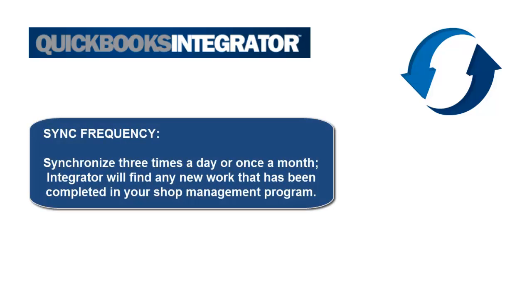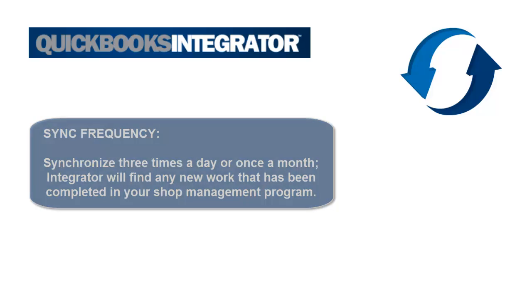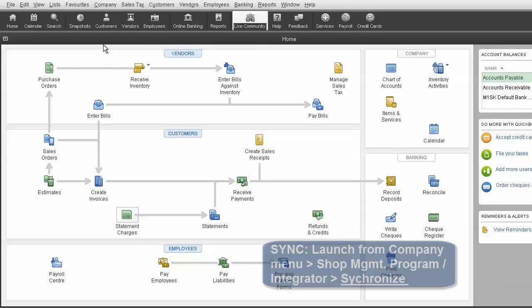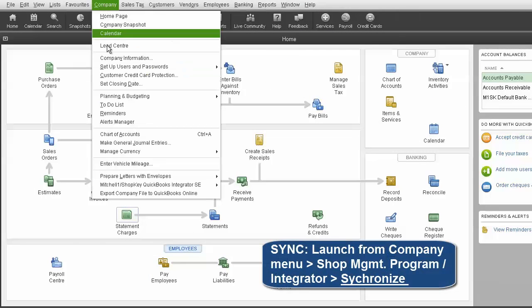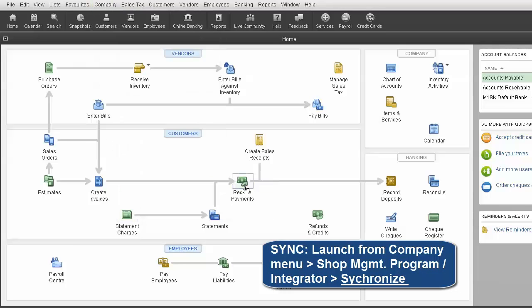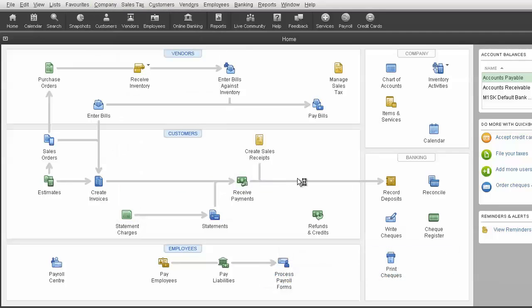You can choose to synchronize three times a day or just once a month, and the Integrator will find any new work that has been completed in your Shop Management Program. To accomplish this, you simply click on your Company menu, then Integrator, and click on Synchronize.